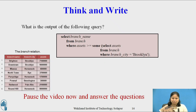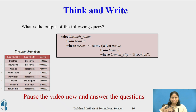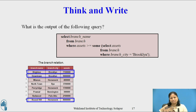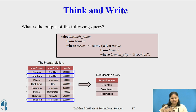Till now we have considered set membership using IN and NOT IN operators, and set comparison using the SOME operator. Now pause this video and reflect on this question for a minute or two, then write your response. Once you have the answer, you can restart the video. The question is: what is the output of the following query? The query finds all branches that have assets greater than or equal to some branch located in Brooklyn. The result consists of three tuples.